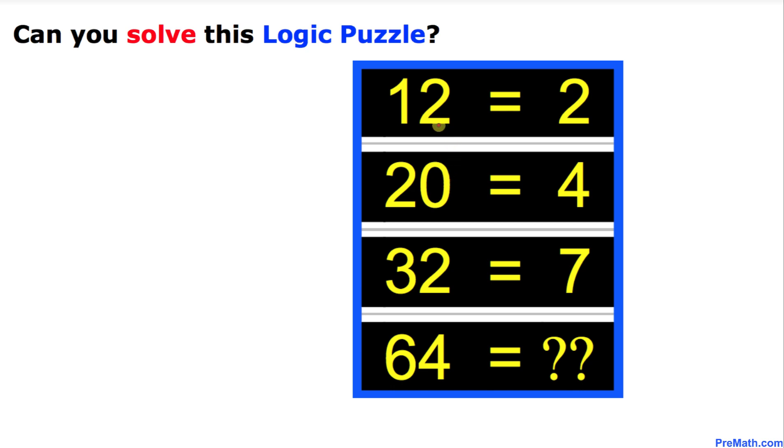As you can see, we have 12 that gives us 2, 20 gives us 4, 32 gives us 7. Now the question mark is, what number 64 is going to give us?